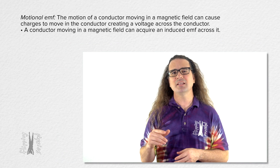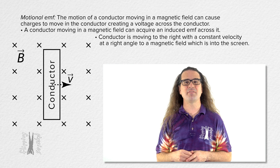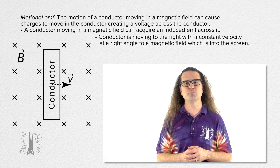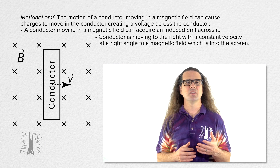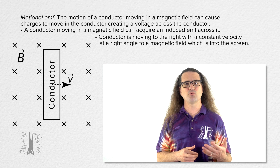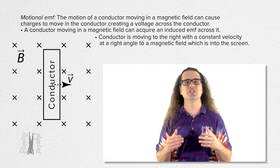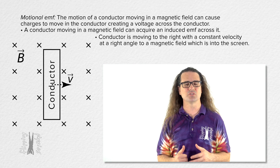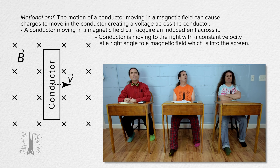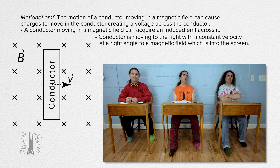As an example, let's say we have a conductor in the shape of a long thin rectangle moving to the right with a constant velocity at a right angle to the magnetic field, which is into the screen. Objects can just fly at constant velocities through magnetic fields — it's an airplane. He's showing a simplified version of an airplane wing flying through the Earth's magnetic field.